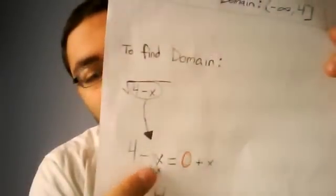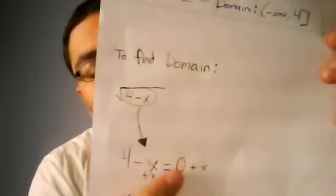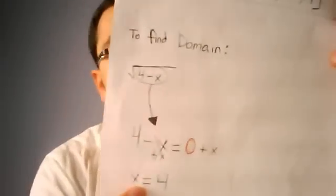Then you just solve for x. I added x to both sides because x was negative, and then x would end up equaling positive 4.